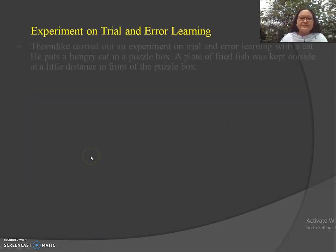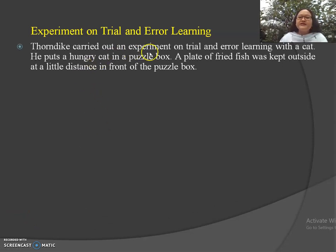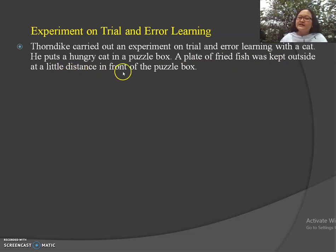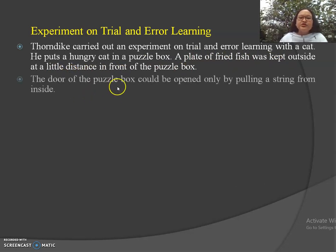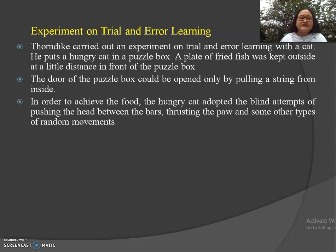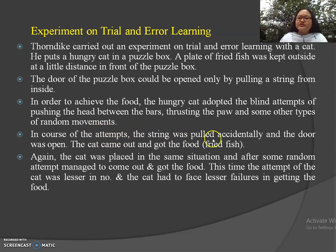Thorndike carried out an experiment on trial and error learning with a cat. He placed a hungry cat in a puzzle box, and a plate of fish was kept outside at a little distance in front of the box. The door of the puzzle box could be opened only by pulling a string from inside, so no one could help the cat from outside. In order to get the food, the hungry cat adopted blind attempts of pushing its head between the bars, scratching the ground, and other random movements. In the course of these attempts, the string was pulled accidentally — remember the word accidentally — and the door was opened. The cat came out and got the fish kept outside the puzzle box.